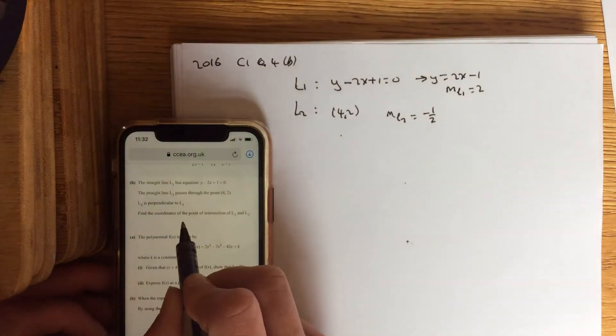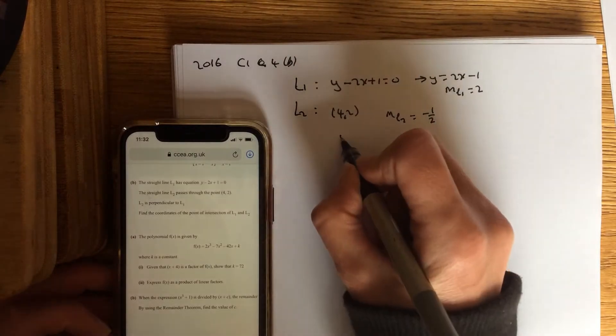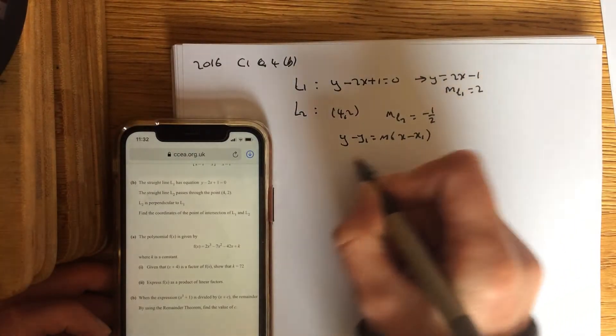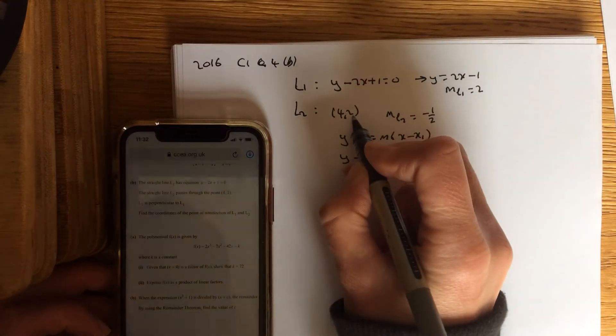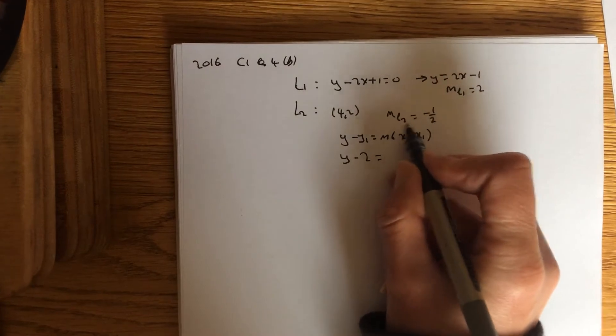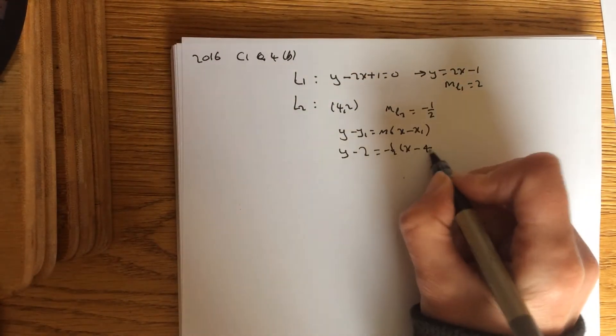Now, you're looking to see where the points intersect, so I need to have the equation of L2. So y minus y1 equals m, x minus x1. I know L2 goes through this point, so that's your y point to sub in. Your gradient of this second line is minus 1 over 2, x minus the x point.